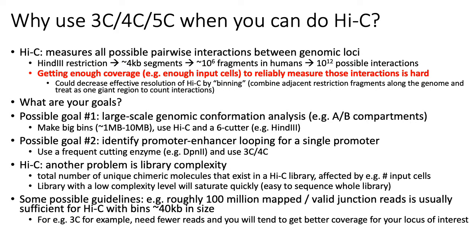One potential reason is that Hi-C has lower resolution. One of the problems with Hi-C is that you're measuring all possible pairwise interactions between genomic loci. If you use HIND3 as a restriction enzyme, for example, HIND3 will generate in the human genome somewhere on the order of 10^12 possible interactions that it could be assaying in a single experiment. Getting enough input genomic sequence from many different cells is actually pretty hard, so your coverage of the interactions for any given short region, say 100 base pairs, is really bad.